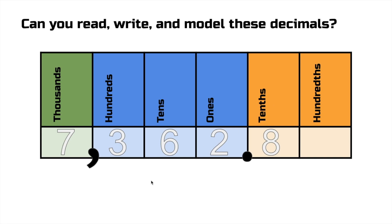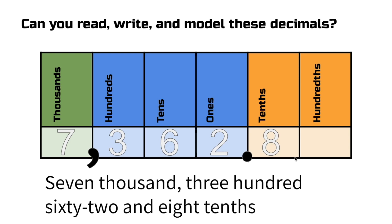What about this beast right here? Let's take it one step at a time. One place, one period at a time. How about that? Seven thousand, three hundred sixty-two, and eight tenths. Seven thousand, three hundred sixty-two, and eight tenths.